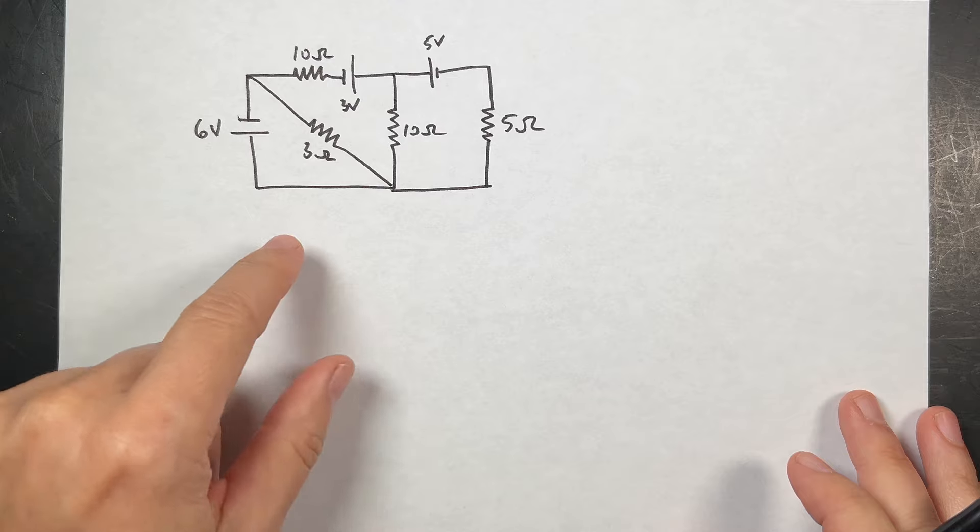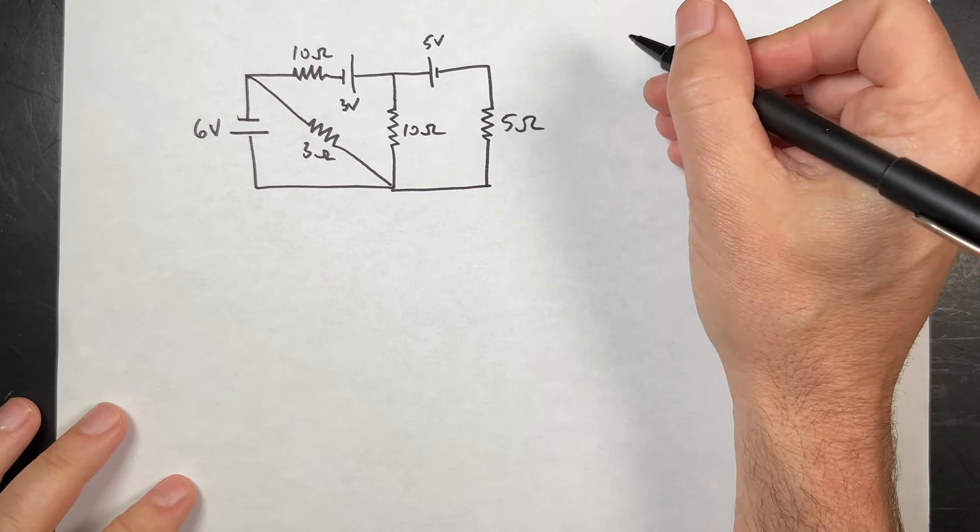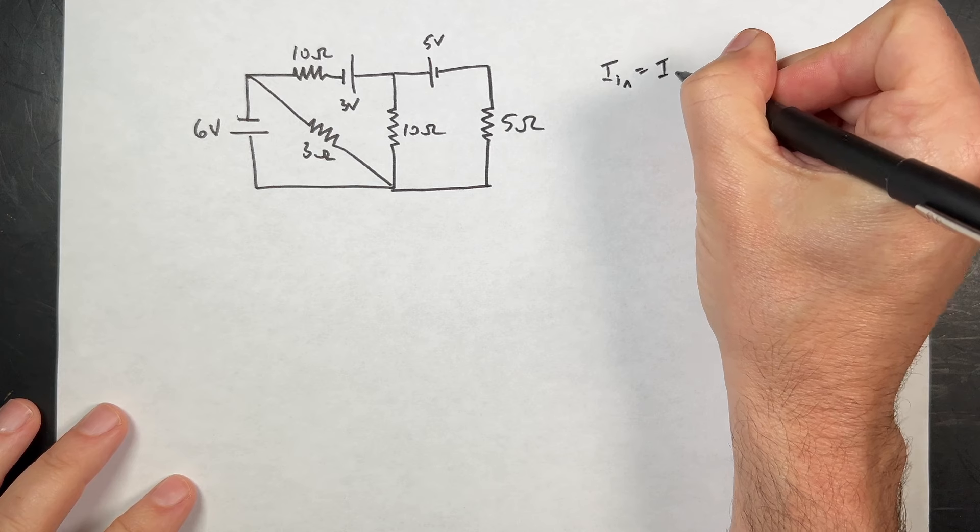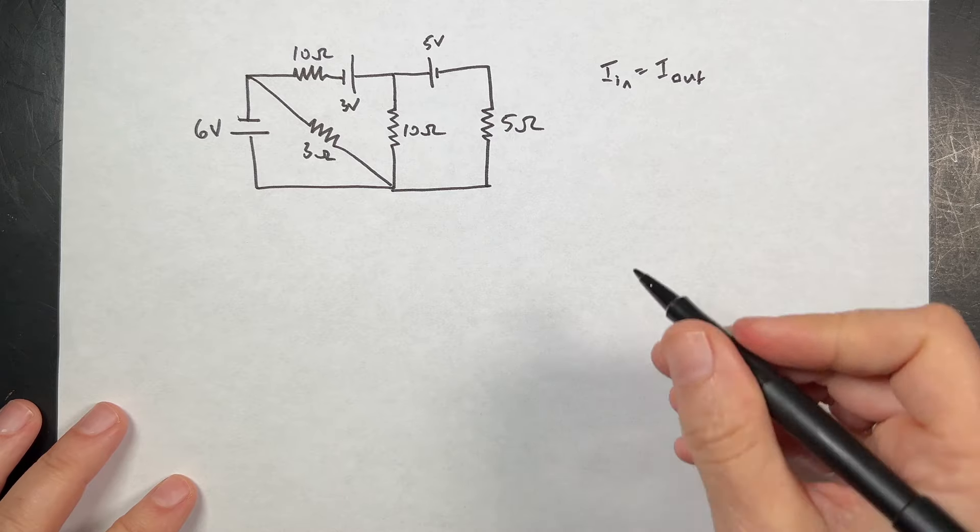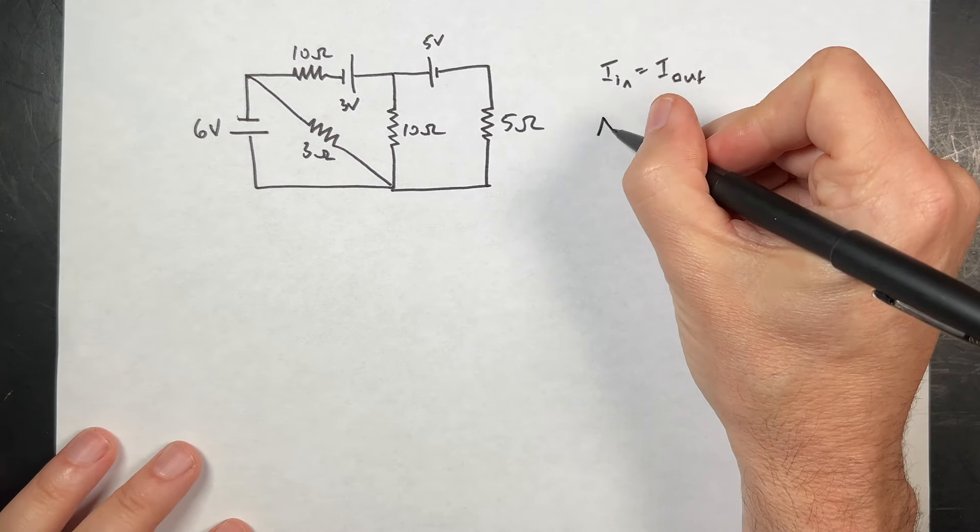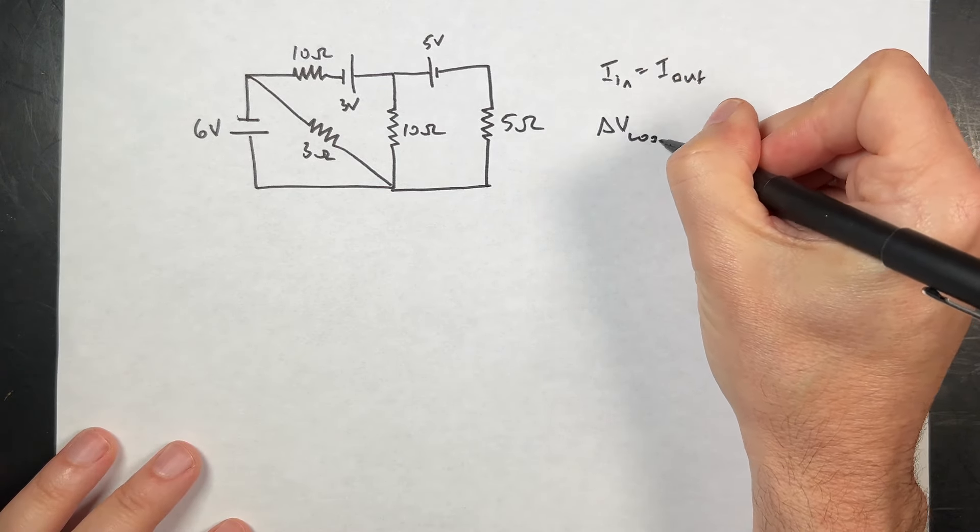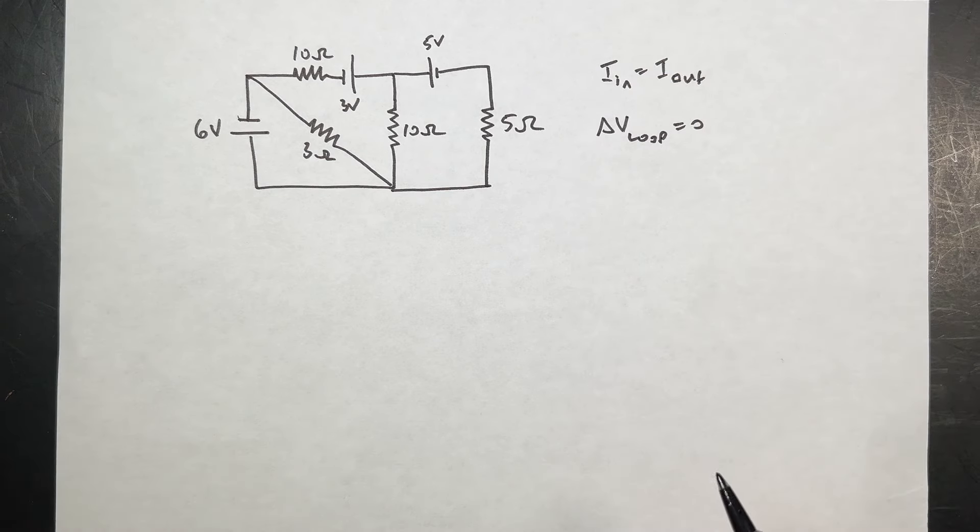And we want to create a system of equations and solve it for this. There's really two things we have going on here. We have the junction rule, which says that I in is equal to I out. The total current coming into a junction is the current coming out. And then we have the loop rule, which says delta V loop equals zero. So if you add up all the voltages around the loop, you get zero.